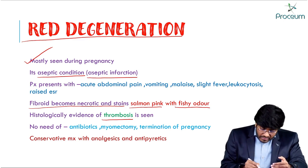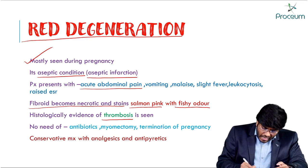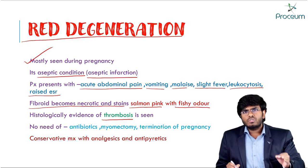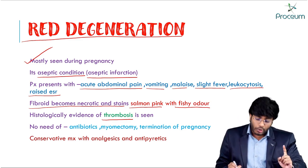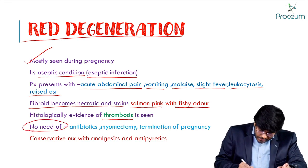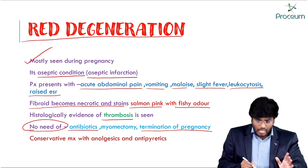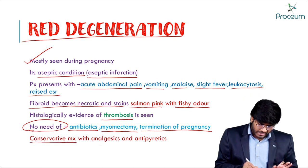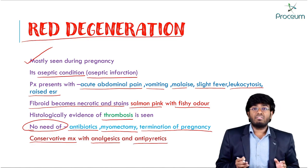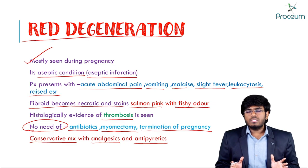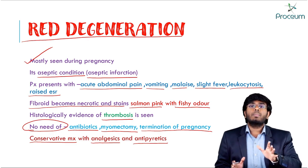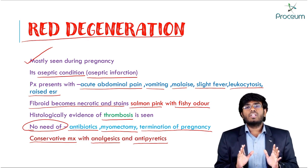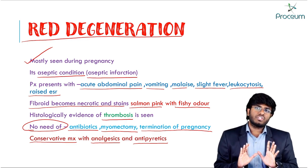Importantly, when red degeneration occurs in the second trimester, there is no need to terminate the pregnancy, no need for antibiotics, and no need for myomectomy. Conservative management with analgesics and antipyretics is sufficient. The degeneration will resolve on its own in two to three days.